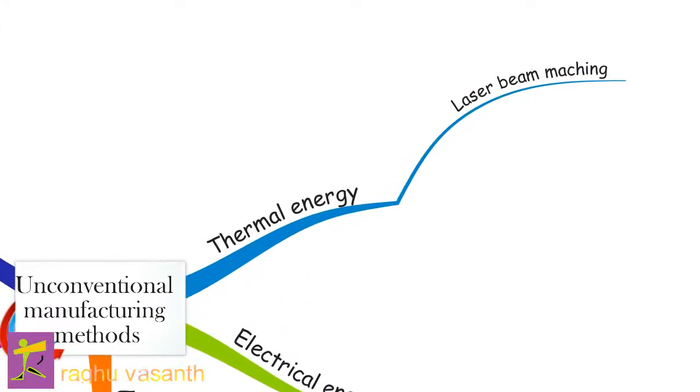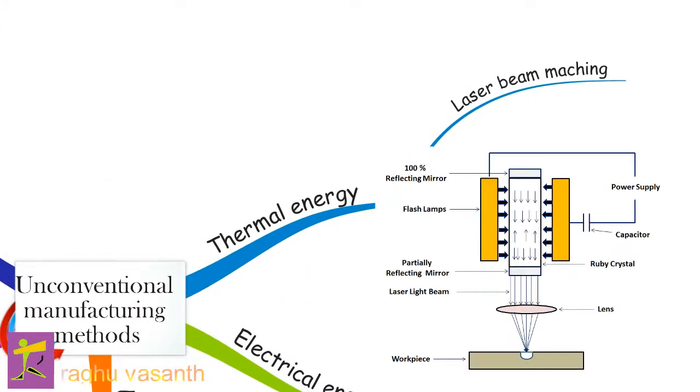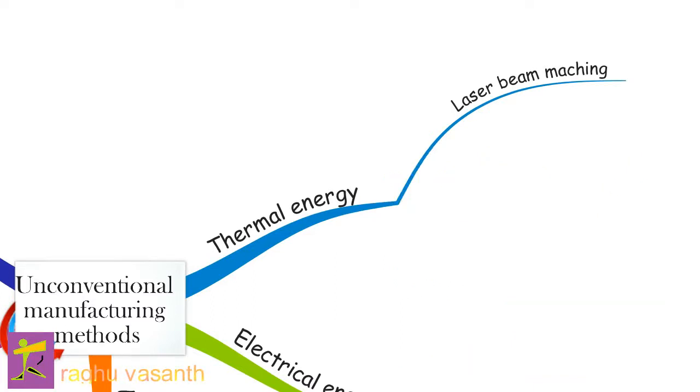Laser beam machining is a non-traditional subtractive manufacturing process in which a laser is directed towards the workpiece for machining. This process uses thermal energy to remove material from metallic or non-metallic surfaces. The laser is focused onto the surface to be worked and the thermal energy is transferred to the surface, heating and melting or vaporizing the material.